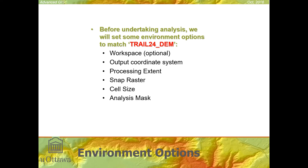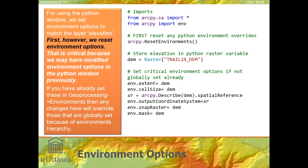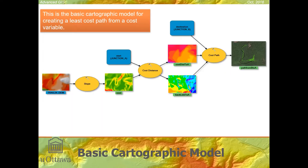Before we undertake our analysis, we have a layer called Trail24DEM — a Digital Elevation Model raster layer. Ensure that you set all your critical environment options to match Trail24DEM. You could also do that in Python or just let the Python environment inherit from the global application-level environment settings. In our first example, we're just considering slope — the idea that for an easy trail, it should be emplaced to minimize the amount of slope traversed by someone going on that trail between junction A and junction B.